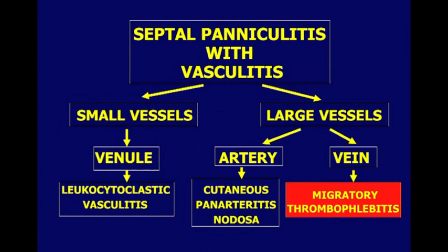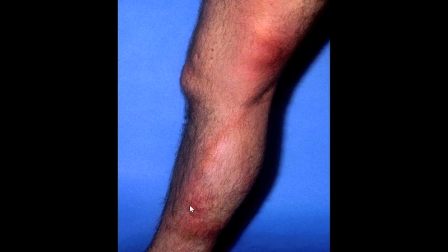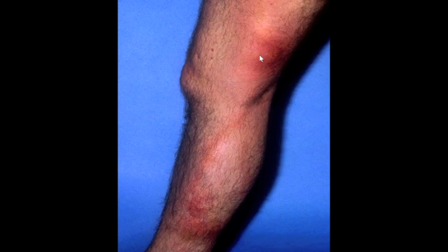The other possibility for septal paniculitis with vasculitis is involvement of the vein. When we have involvement of a large vein, the diagnosis is migratory thrombophlebitis. Clinically, we see erythematous nodular lesions that are painful, and we have an erythematous cord joining the nodules — this is the inflamed vein. The name 'migratory' refers to the thrombosis of the vein: in a few days, the thrombus is recanalized, and then the lesion appears in another area of the involved vein.